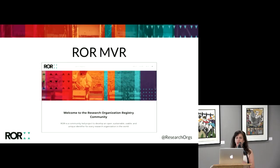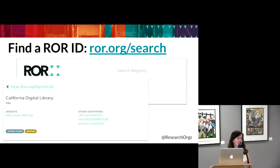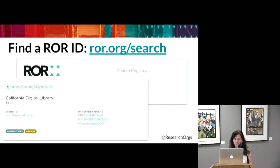In January we launched our registry — we're calling it the MVR, our minimum viable registry. We have 91,000 research organizations in ROAR and they all have their own unique ROAR ID. You can go to ROAR.org/search right now if you are on a laptop or on a mobile device. You can look up your own organization or any other organization that comes to mind. I'm showing an example right here of California Digital Library.